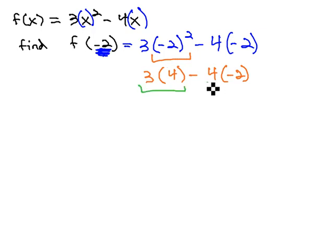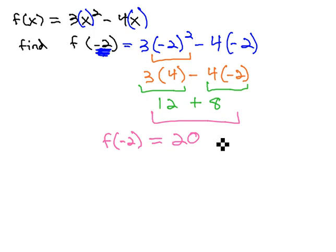Now, we can multiply both terms together. 12 and -4 times -2 is positive 8. And finally, 12 plus 8 is 20. We have found f of -2 is equal to 20. This means when -2 goes in for the x in the function, the solution we'll get is 20.